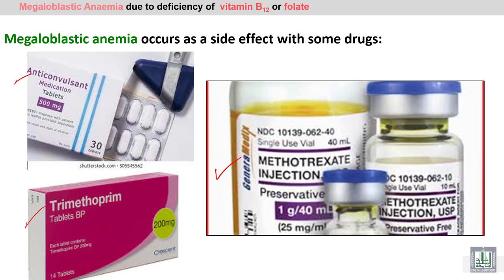Megaloblastic anemia can also occur as a side effect of certain drugs, such as methotrexate, anticonvulsant drugs, and trimethoprim antimicrobial drugs. These drugs cause decreased activation of folic acid by inhibiting the enzyme responsible for converting the inactive form to the active tetrahydrofolate form.